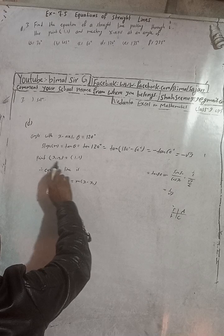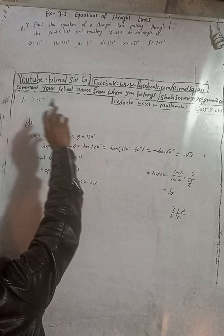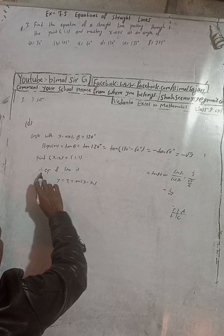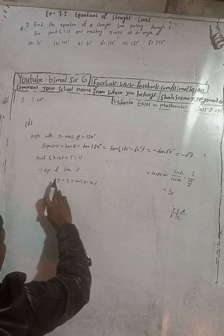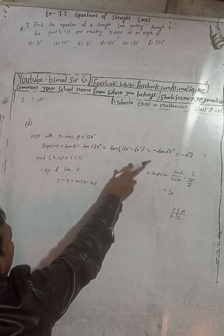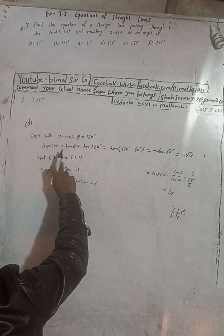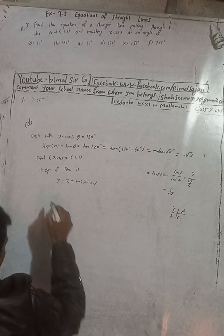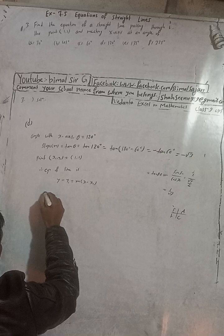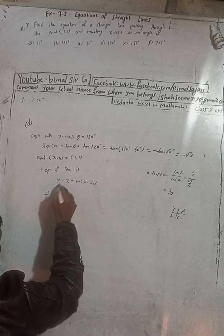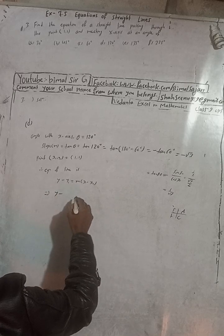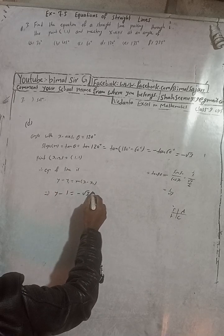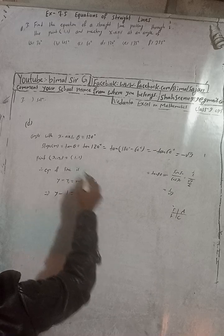The point x1, y1 is (1, 1) as given. Therefore the equation of the line using y minus y1 equals m into x minus x1 gives: y minus 1 equals minus root 3 into (x minus 1).